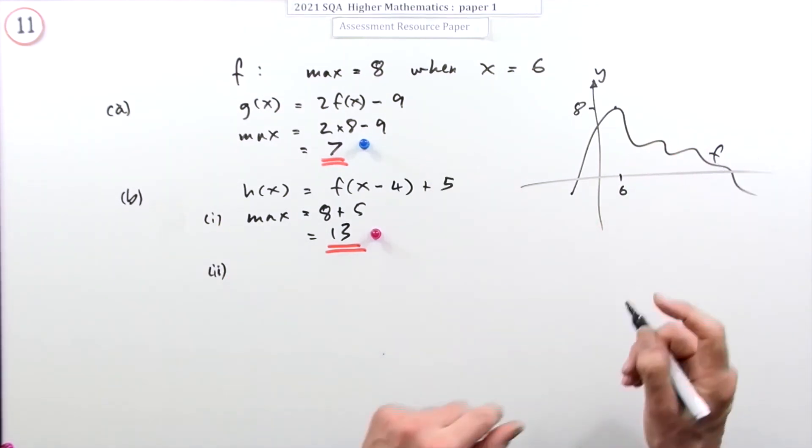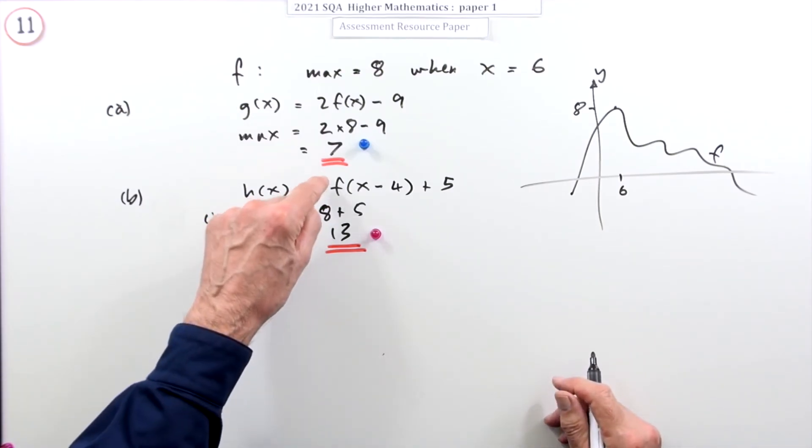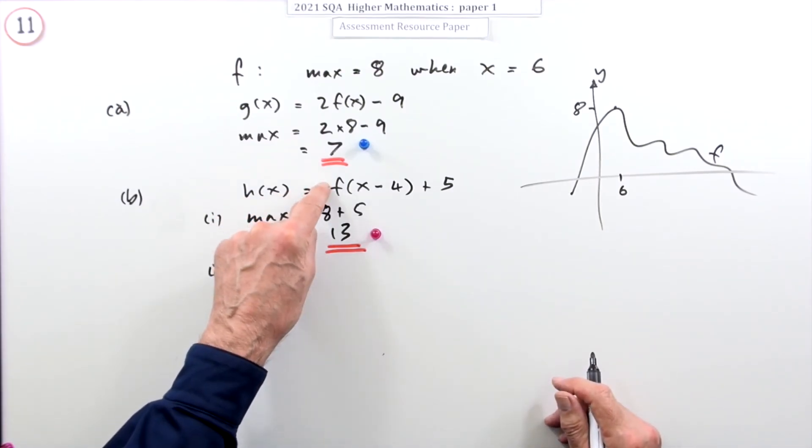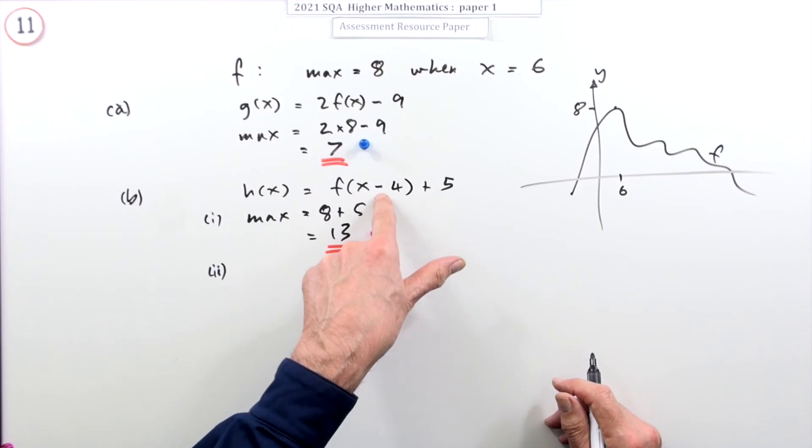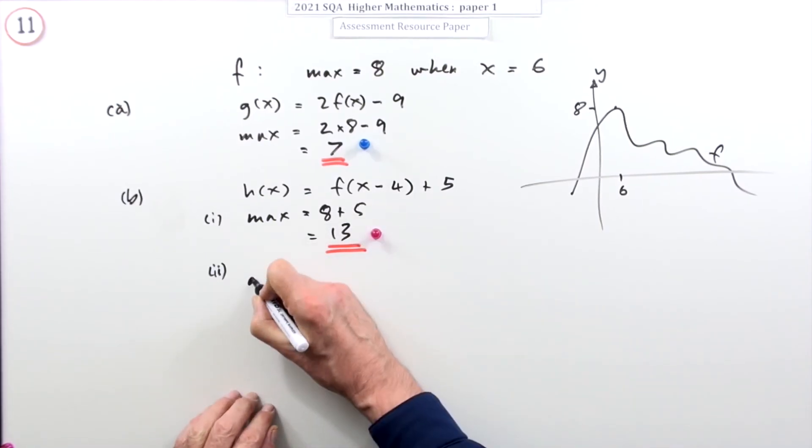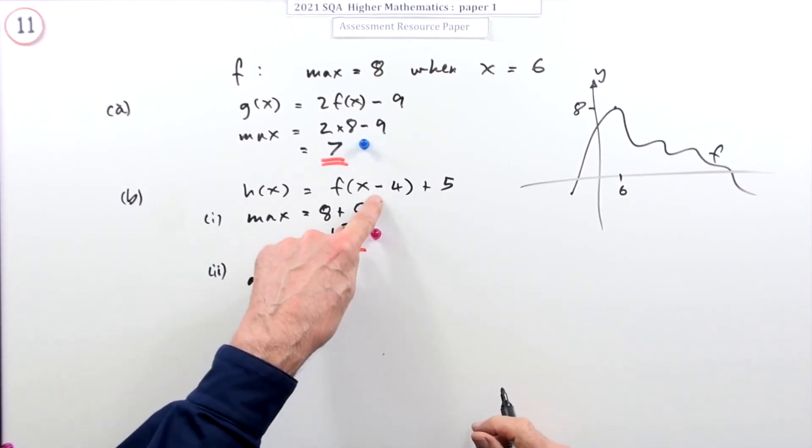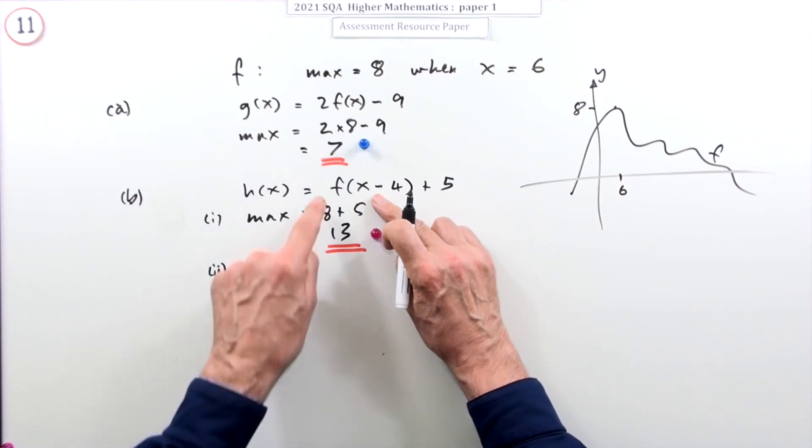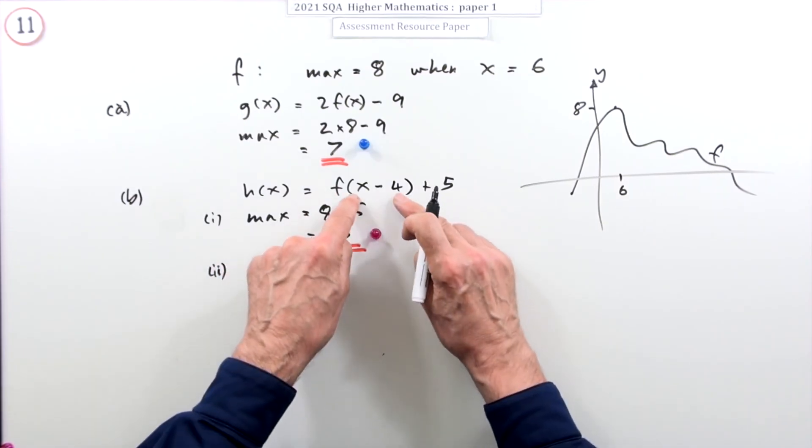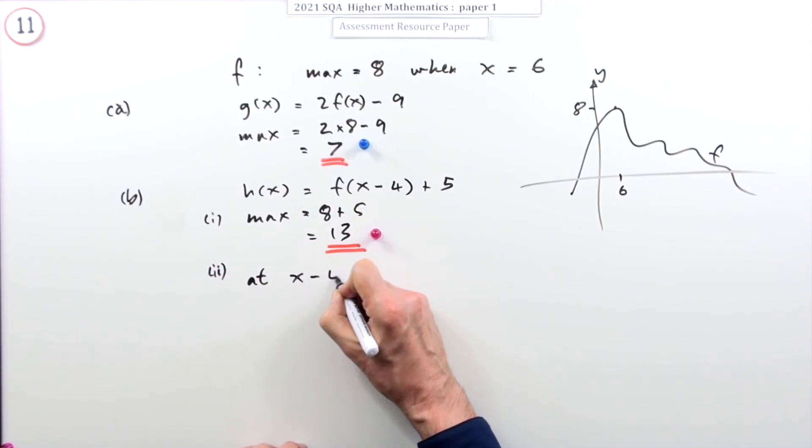Or you could do it sort of properly and say this: f was at its maximum when it was acting on six. If I put a six in there, I'll get the biggest value of f. Now that says x minus four, so it's x minus four equals six.